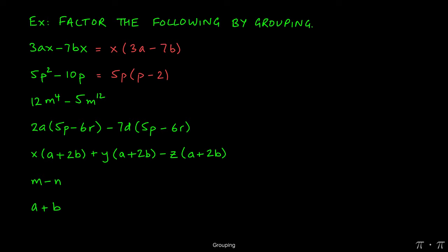For the next problem, 12 and negative 5 don't have any factors in common, so we move our vision to m to the 4th and m to the 12th. Well, there are 4 m's that can be yanked out of both terms, so we factor out m to the 4th. When we divide 12 m to the 4th by m to the 4th, we get just 12.